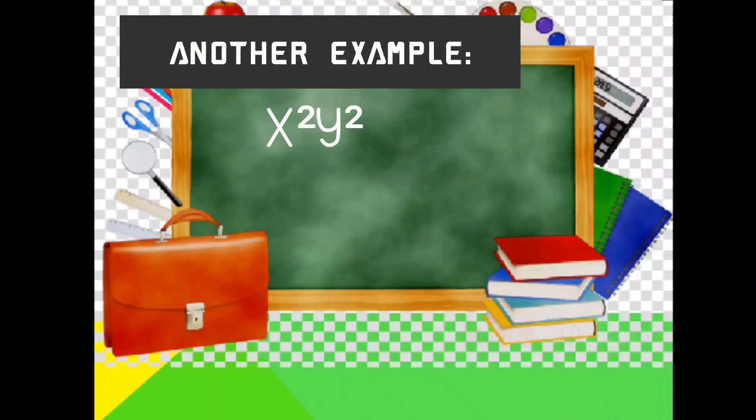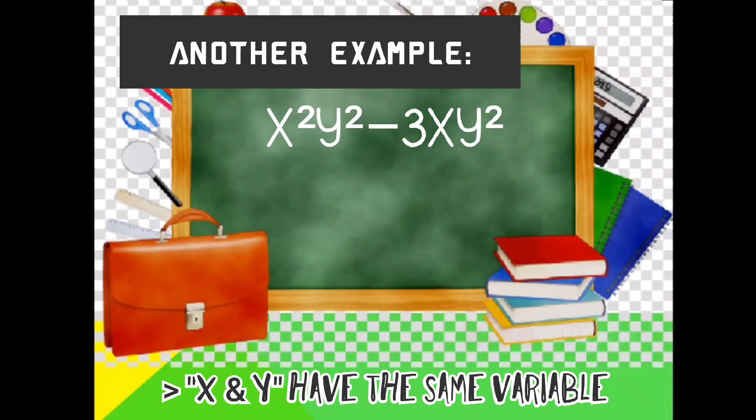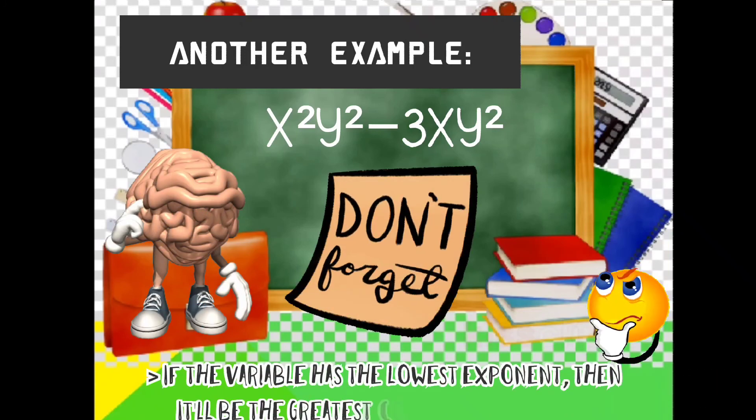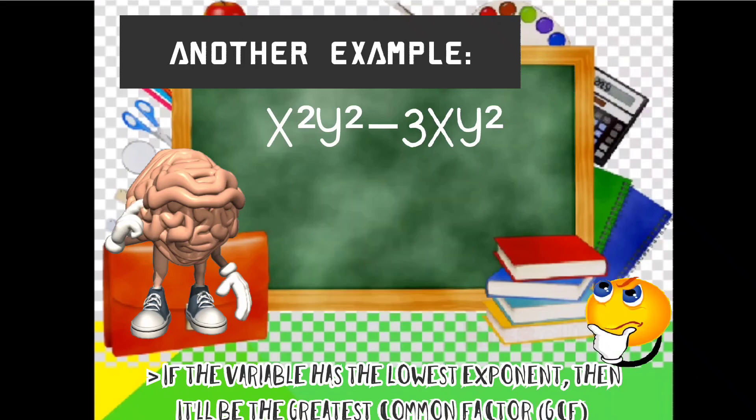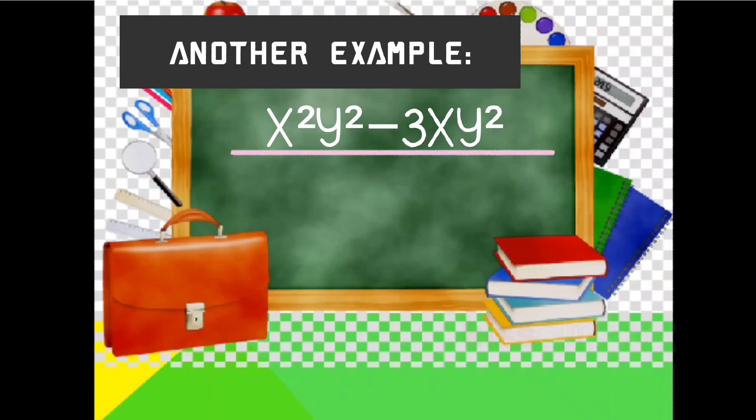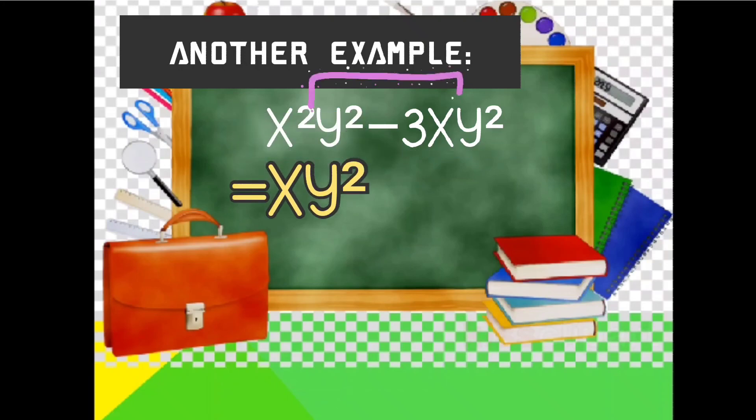Another example, x squared y squared minus 3xy squared. Mag-iisip ka ngayon ang common factor ng dalawang term. Kung mapapansin niyo, parehong may variable x and y. Always remember, pag nag-factor ka ng variable at may pinakamababang exponent, yun ang magiging greatest common factor. So x squared y squared minus 3xy squared. Ang factor niya ay xy squared. x squared y squared divided by xy squared is equivalent to x. Then negative 3xy squared divided by xy squared is equivalent to negative 3. So the final answer is xy squared times x minus 3.